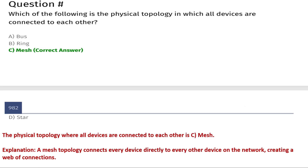The next question is: which of the following is the physical topology in which all devices are connected to each other? Option A: bus, Option B: ring, Option C: mesh, Option D: star. The correct answer is Option C, mesh.